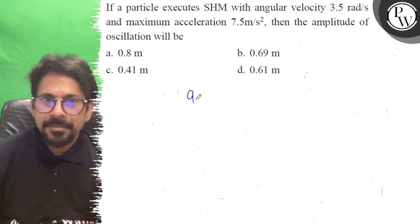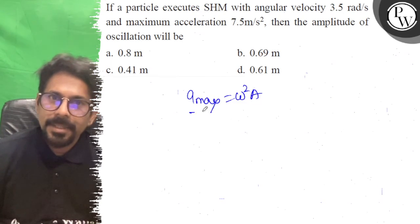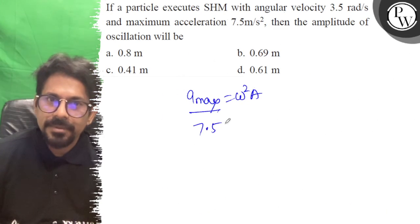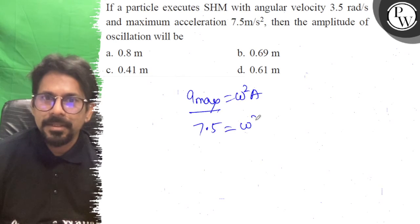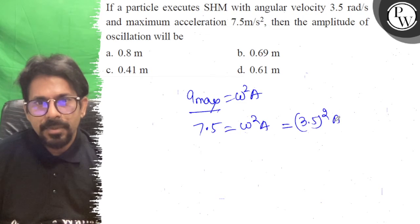So your maximum acceleration is nothing but omega squared A. So A maximum is how much? 7.5 is equal to omega squared into A, or omega 3.5 whole square into A.